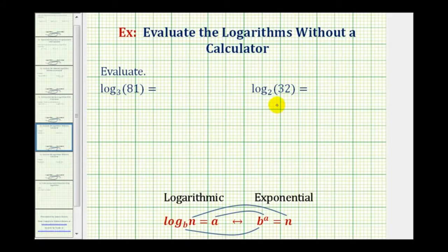We want to evaluate the two given logarithms without the use of a calculator. We have log base 3 of 81 and log base 2 of 32. To evaluate these, we're going to set them equal to a variable, let's say x, then we'll write this as an exponential equation to determine the value of x.